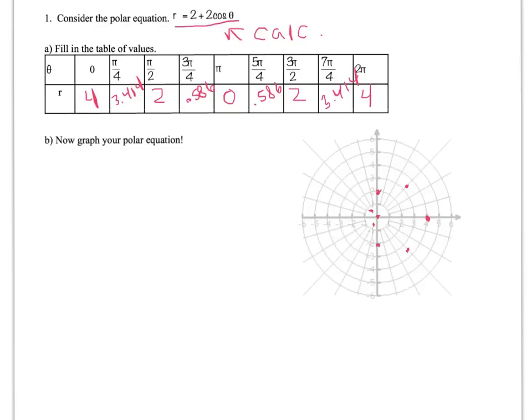If we trace this path, you have this nice heart, sort of heart-looking graph, and that's why they often are called cardioids.